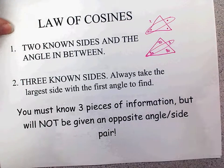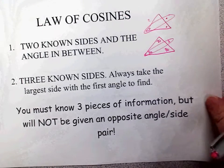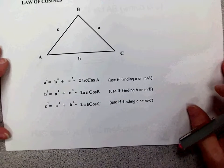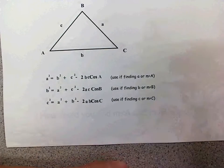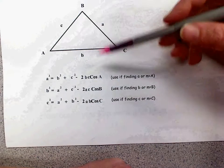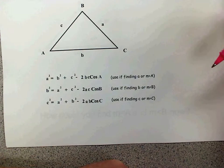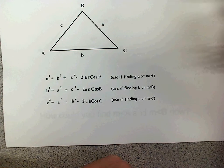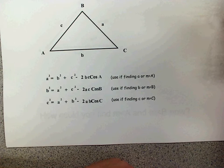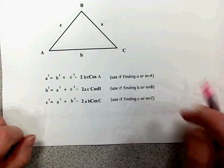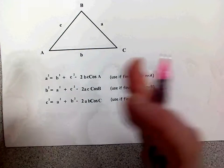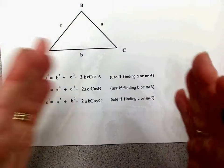We just got through discovering the law of cosines, which may seem a little intimidating when you first look at these formulas. But I want to break it down so you can see how easy this is to memorize and use. There are three different forms, and just like with the law of sines where we had three ratios but only used two at a time, there are three different equations we can form.